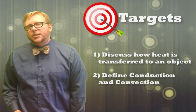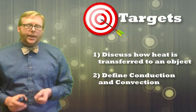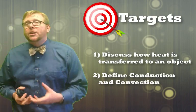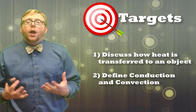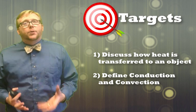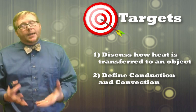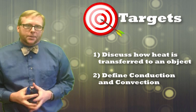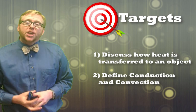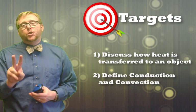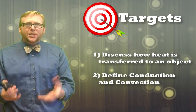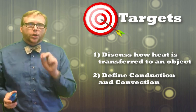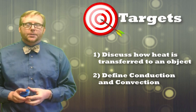In this video we're going to be doing two very specific things. First, we're going to discuss how heat is transferred in our planet and on any object. In particular, we're going to define two of those methods — they're called conduction and convection.